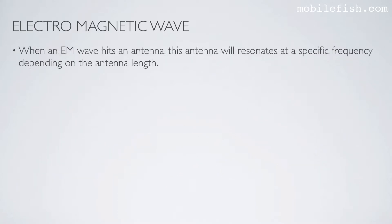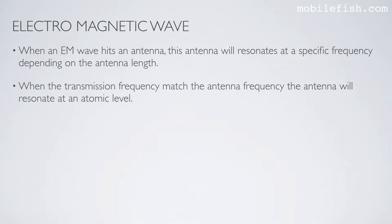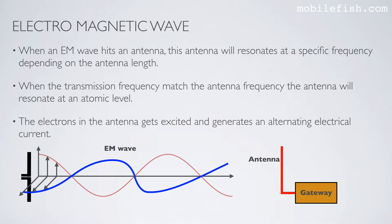When an electromagnetic wave hits an antenna, this antenna will resonate at a specific frequency depending on the antenna length. When the transmission frequency matches the antenna frequency, the antenna will resonate at an atomic level. The electrons in the antenna get excited and generate an alternating electrical current.